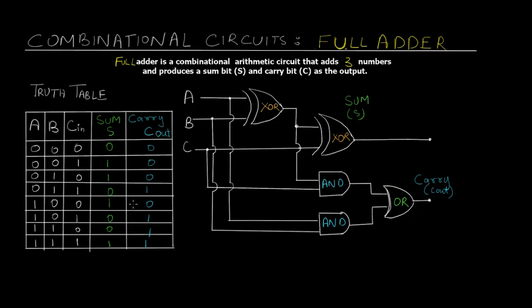We've also solved boolean expressions, simplified them, and derived the logic circuits. These combinational circuits are predefined to achieve certain tasks. If you don't know boolean expression solving and simplification, or if you don't have any idea about logic gates, you can check out the videos from this playlist where we've discussed the different logic gates and also saw their expressions. So with that being said, let's get started.